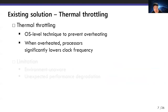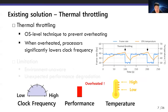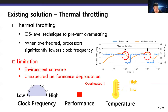Thermal throttling is a well-known technique to prevent overheating. If the current cooling power is not enough and the device overheats above a certain temperature, it significantly lowers the processor's clock frequency. The figure shows the frame rates of a video along with CPU temperature. You can see the moments in two red circles where frame rates sharply drop — this is where thermal throttling happens to cool down the system. Rapid performance degradation is a limitation of thermal throttling, so it is best to avoid it as much as possible.